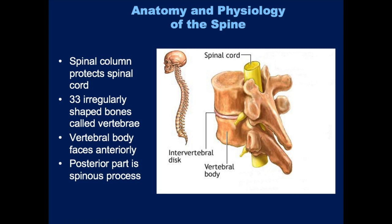The part of the skeletal system that is critical for the spinal cord is the spinal column, which provides protection to the nervous system and essentially encases the spinal cord. The spinal column is made up of 33 different bones, each one called a vertebra. They lie directly on top of each other and form a strong, flexible column.